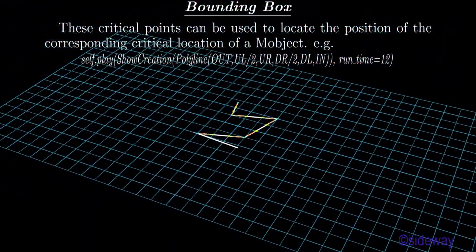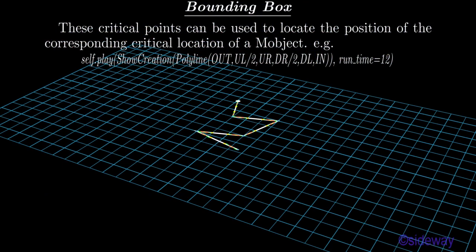Bezier controls on polyline are: critical location out, critical location origin, critical location in, critical location up, critical location down, critical location left, critical location right, critical location up-left, critical location up-right, critical location down-left, critical location down-right.